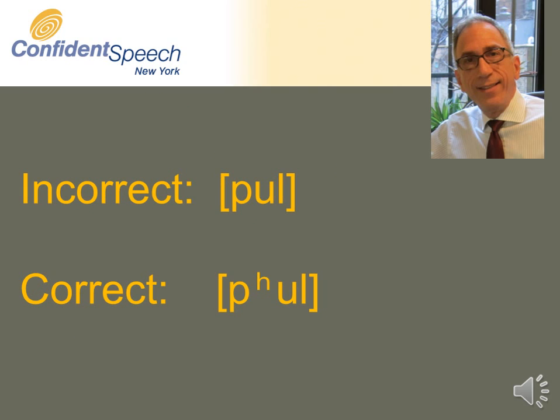With an incorrect allophone of p, it sounds like this: Pool. With the correct aspirated allophone of p, it sounds like this: Pool. Incorrect: Pool. Correct: Pool.